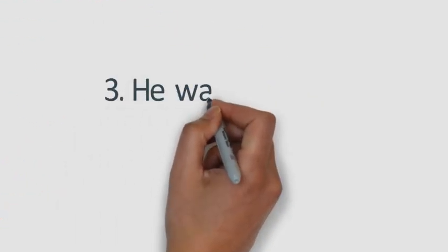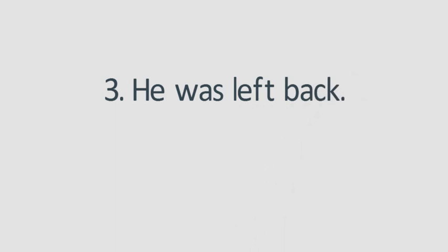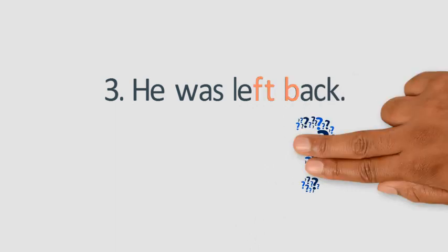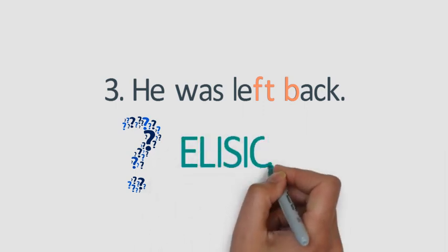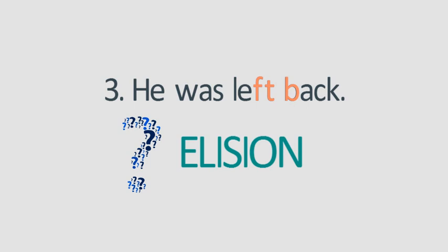Number three: 'He was left back,' 'he was left back.' Ten seconds. Brilliant — elision. The T in 'left' is dropped so that there are fewer consonant sounds to say in a row. 'Left back,' 'he was left back.'